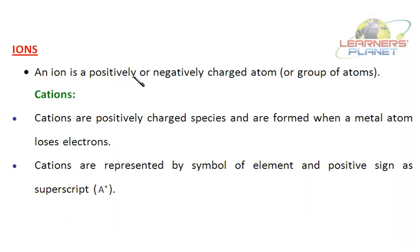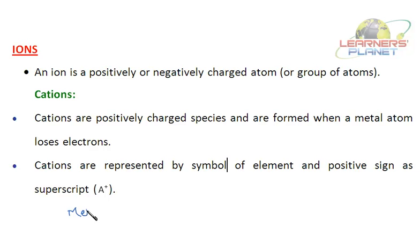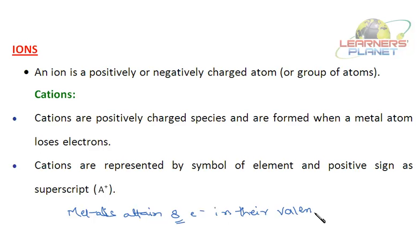An ion is a positively or negatively charged atom. They are of two types: cations and anions. Cations are positively charged species and are formed when a metal atom loses electrons. This is one of the basic characteristics of metals — that they are electropositive, meaning they lose electrons, while non-metals gain electrons. Metals attain 8 electrons in their valence shell by losing electrons.